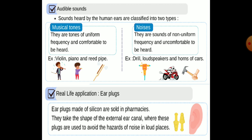Number one: musical tones are tones of uniform frequencies and are comfortable to be heard. Noises are sounds of non-uniform frequency and are uncomfortable to be heard, such as loudspeakers and horns of cars.